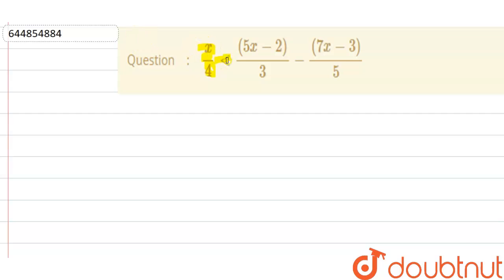x/4 less than (5x - 2)/3 minus (7x - 3)/5. This is given to us, and we need to find the value of x for which this inequality is correct.